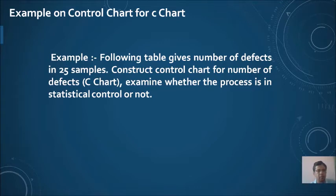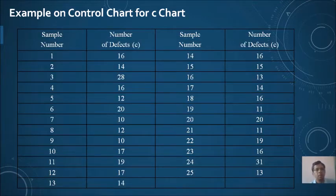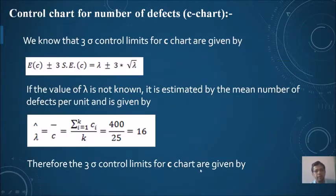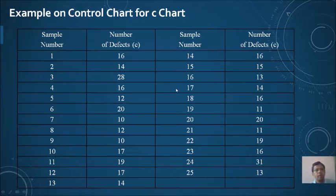You can see the number of samples are 1 to 25 and the number of defects are also given. For example, in sample number 1, the number of defects are 16; in sample number 2, the number of defects are 14, and so on. In sample 24, the number of defects are 31, and in sample 25, the number of defects are 30.